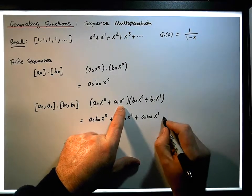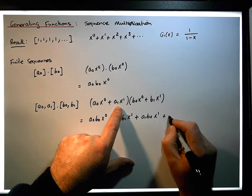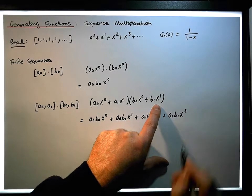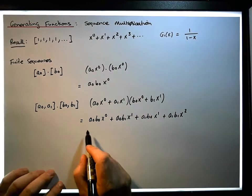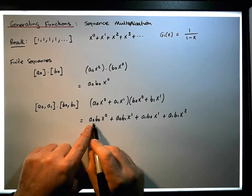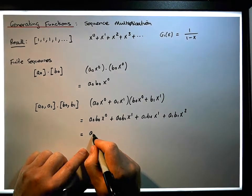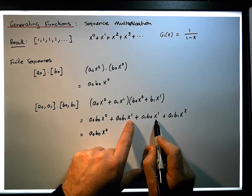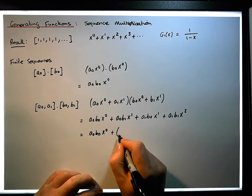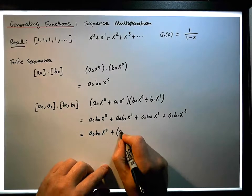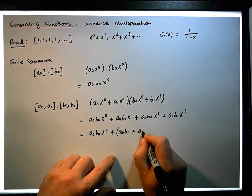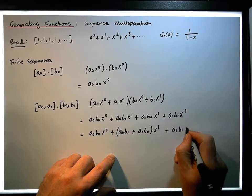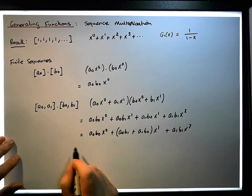We have x to the power of 1, and then the final term is plus a1 b1 times x to the 1 times x to the 1, which is x squared. The important thing I want to show here is a little bit of a pattern. What we end up with is a constant term a0 b0 x to the 0, then terms with x to the 1: a0 b1 plus a1 b0 times x to the 1, and then a1 b1 x squared.